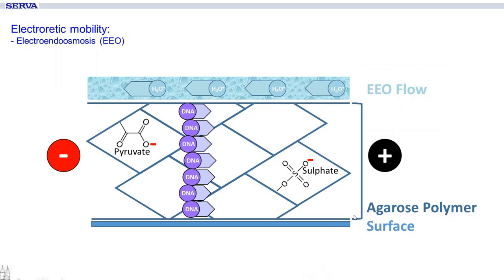An often underrated factor is electroendoosmosis, or EEO. On the loaded surface — with agarose this is mainly glass or plastic — the charge of the surface leads to deprotonation of residues in the gel matrix, producing sulfates or pyruvates inside. The DNA is deflected and as a counterforce, protons bind to water, and in the opposite direction, hydronium moves towards the cathode of the gel. This is called the electroendoosmotic flow, and this flow can be so strong that it leads to rupture of the gel matrix.